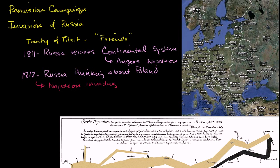His other option would have been just to defend Poland from Russia, but Napoleon says no — if they're going to double-cross me like that, I'm just going to go full tilt and show them who's boss. So he decides to invade in April of 1812.